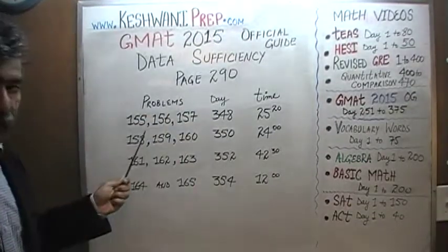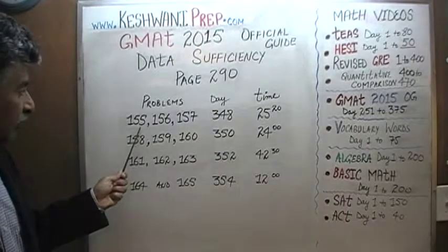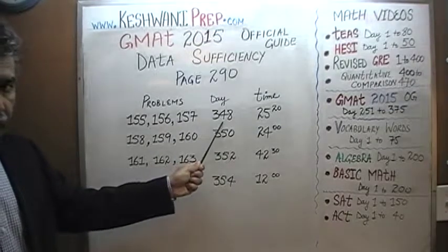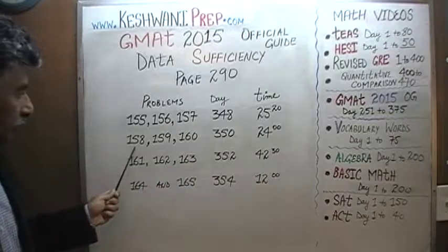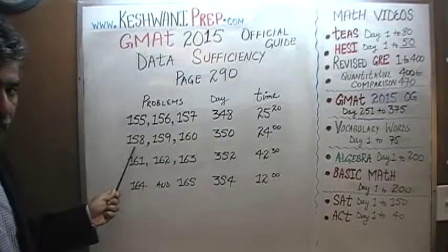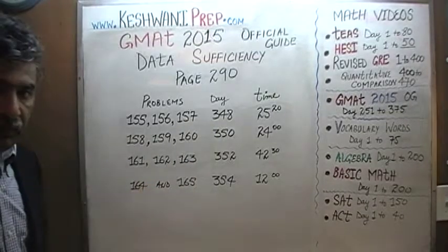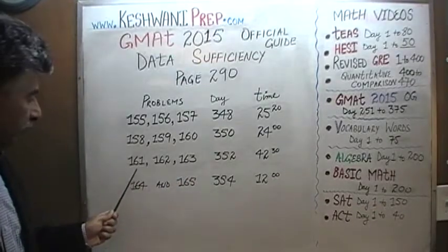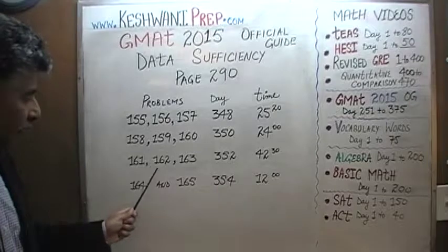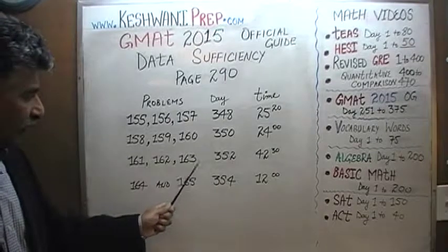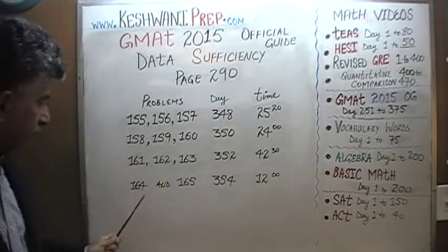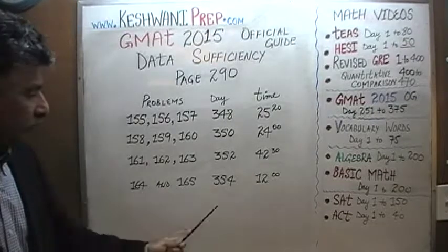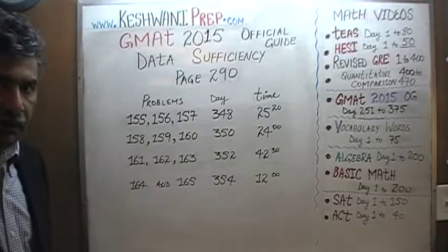You will find the solutions to problem number 155, 156, and 157 on day number 348. Problem number 158, 159, and 160 were solved on day number 350. You will find the solutions to problem number 161, 162, and 163 on day number 352. And finally, problems 164 and 165 were solved on day number 354.